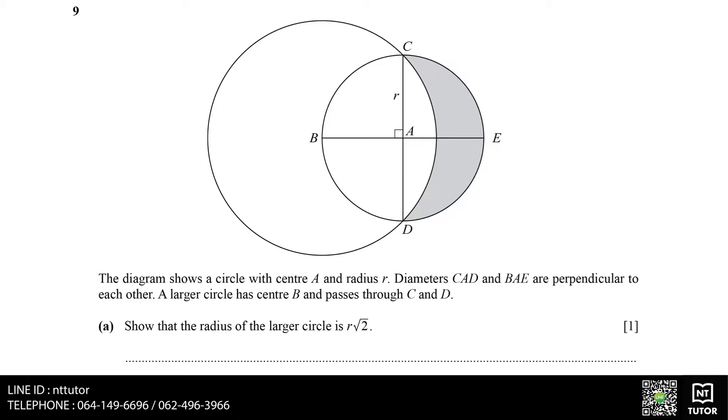Part A: Show that the radius of the larger circle is R square root 2. The radius of the larger circle is any point from point B to the edges of the circle, so BC is the radius of the larger circle. The smaller circle has center at A, which means that AB and AC are the radius of the smaller circle, equal to small r.